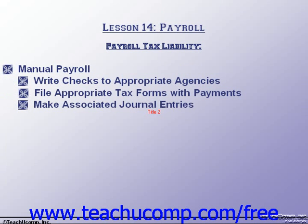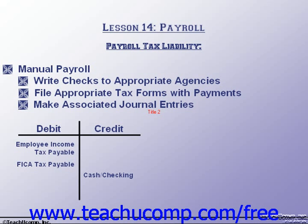When a payroll tax payment is made, it reduces the amounts held in the payroll liability accounts and reduces cash by the same amount. For example, when paying the liability for the employee income tax and FICA tax, the journal entry will debit the employee income tax payable and the FICA tax payable liability accounts and then credit the cash or checking asset accounts for the amount paid for each account.